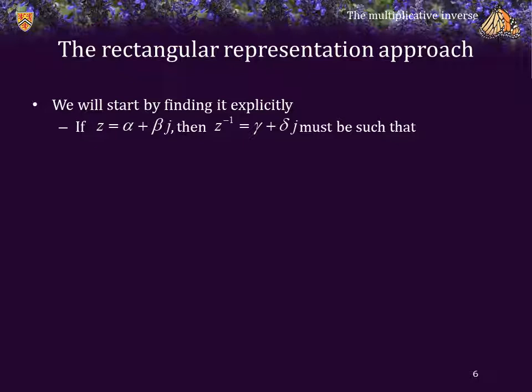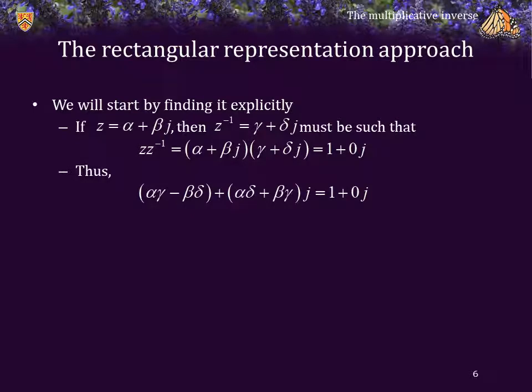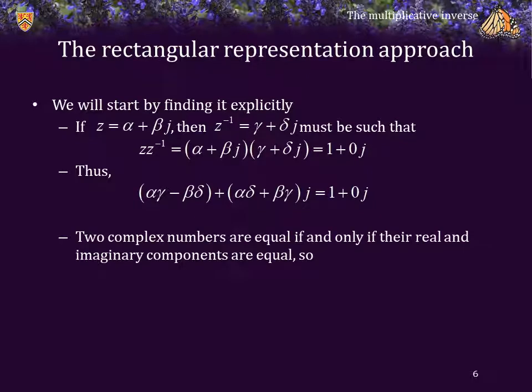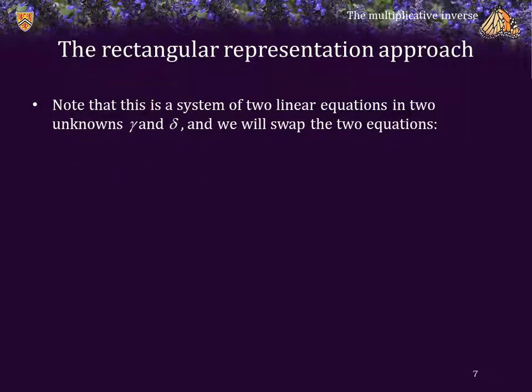If z is equal to alpha plus beta j, then z inverse must be gamma plus delta j, with the property that the product of these two must equal 1. Let's expand out the product of alpha plus beta j and gamma plus delta j. Now, if this is true and these two numbers are indeed equal, this is only possible if the real component of the left-hand side equals the real component of the right-hand side, and the imaginary component of the left-hand side equals the imaginary component of the right-hand side. Consequently, alpha-gamma minus beta-delta must equal 1, and alpha-delta plus beta-gamma must equal 0. You may look at this and think this is a system of non-linear equations, but it isn't, because alpha and beta are already known — there are only two unknowns: gamma and delta.